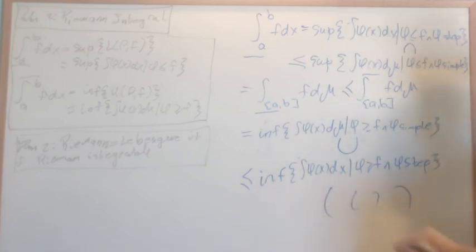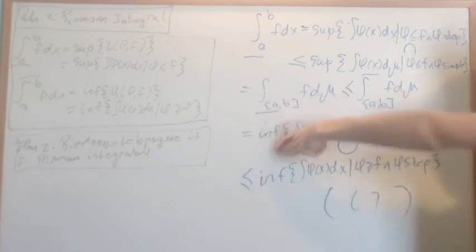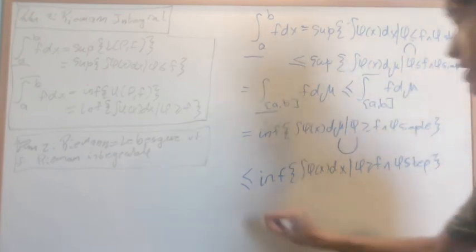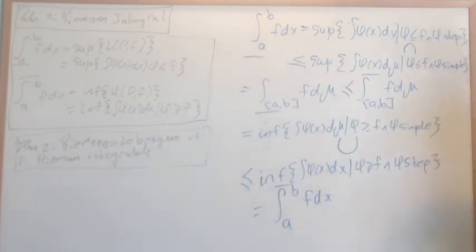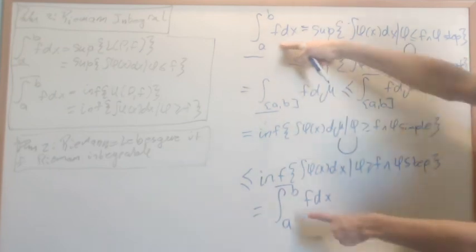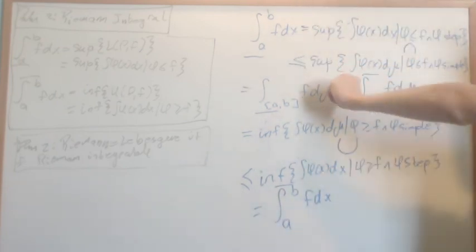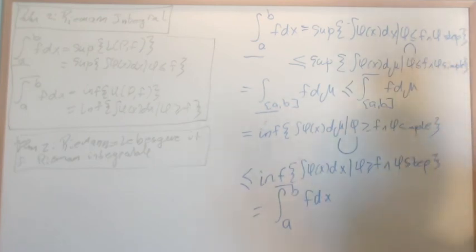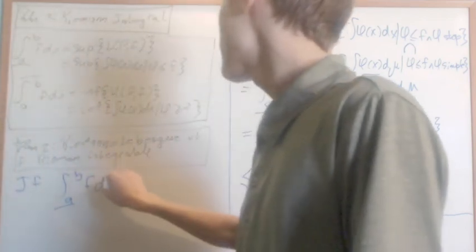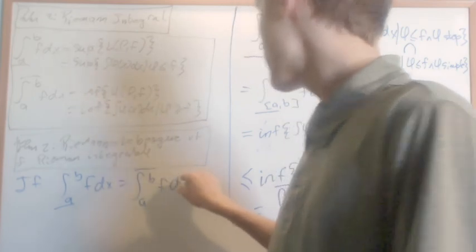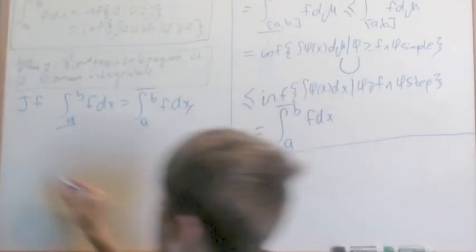The supremum of simple functions with φ ≤ f equals the Lebesgue integral over [a,b] of f dμ (lower). This is less than or equal to the upper Lebesgue integral, which equals the infimum of the integral of φ dμ for φ ≥ f and φ simple. That set is a superset of the step function integrals for φ ≥ f, so the infimum of the simple function set is less than or equal to the infimum of the step function set, which is the upper Riemann integral.